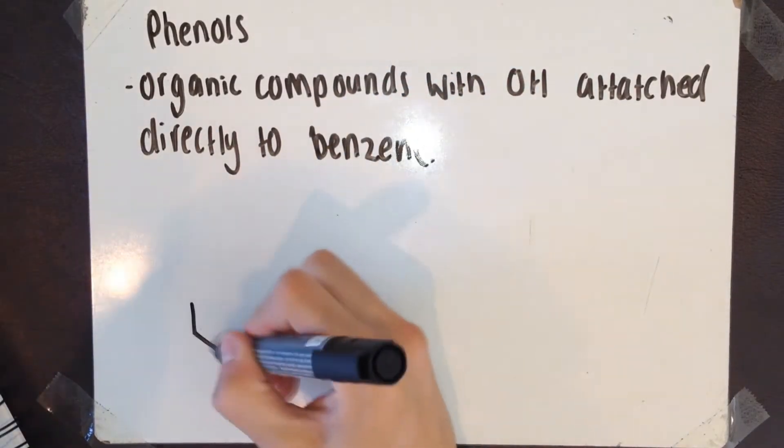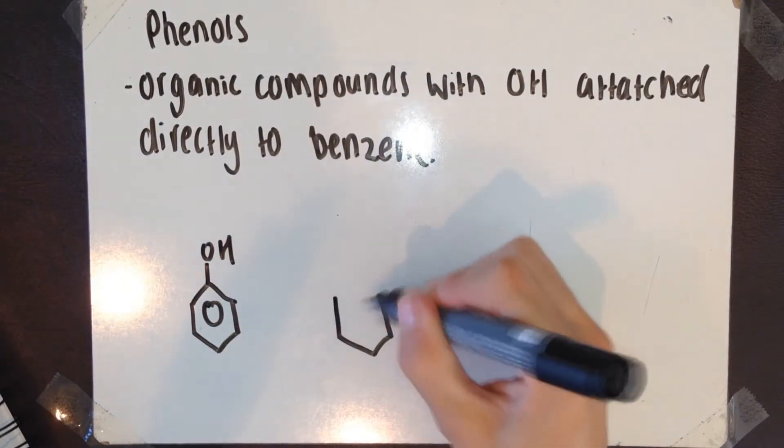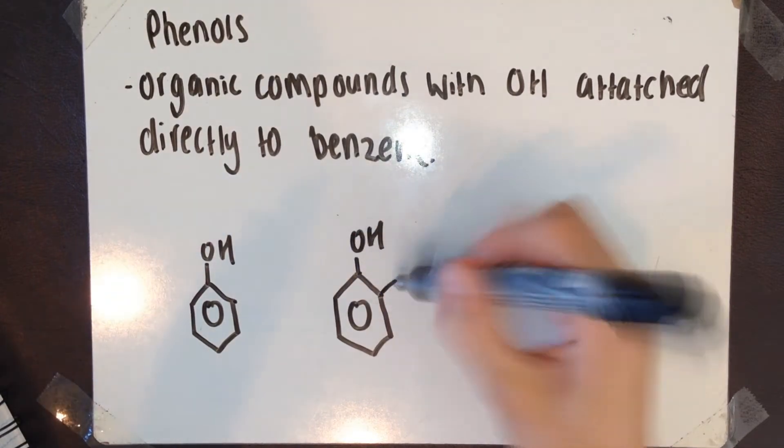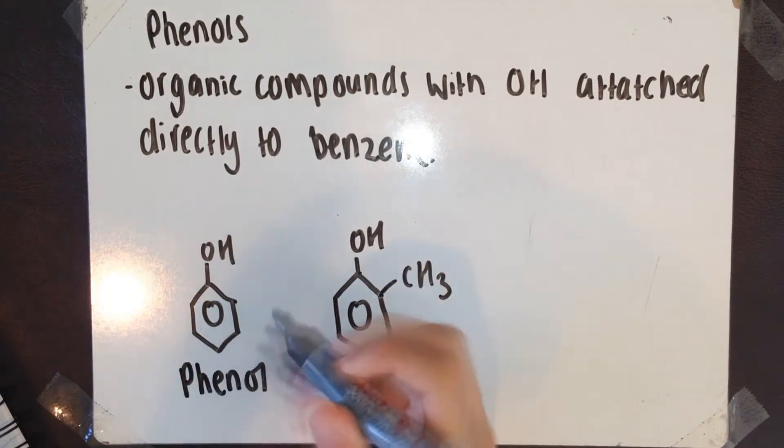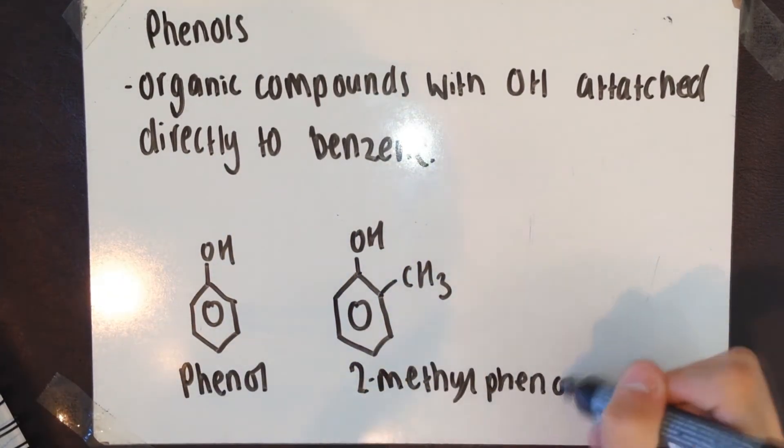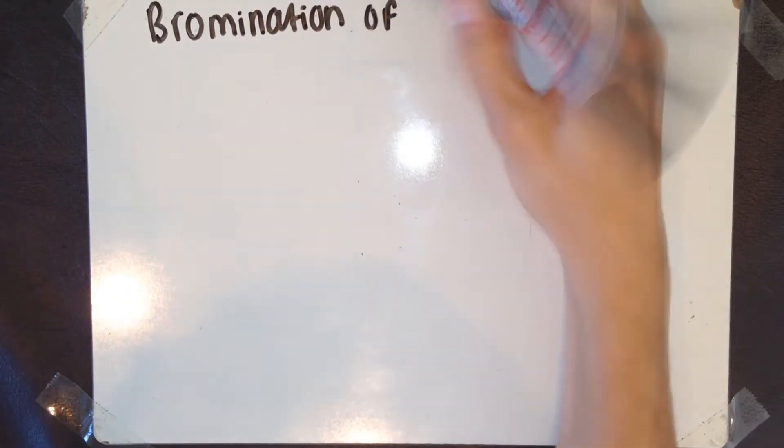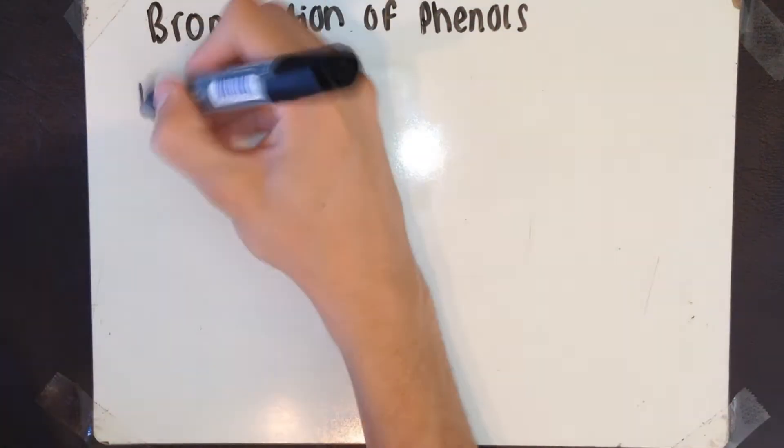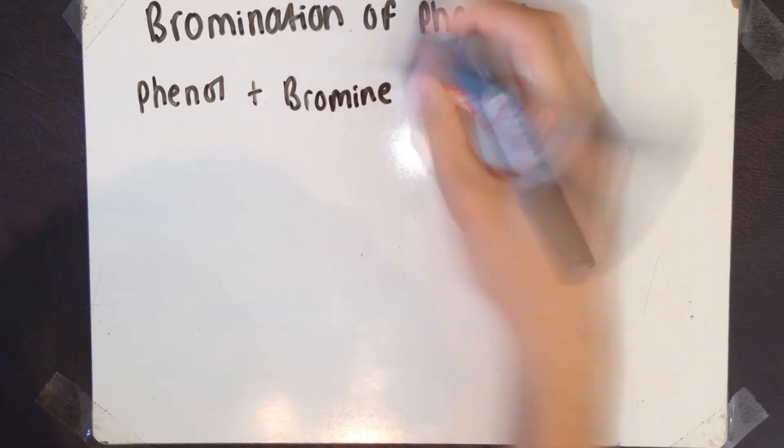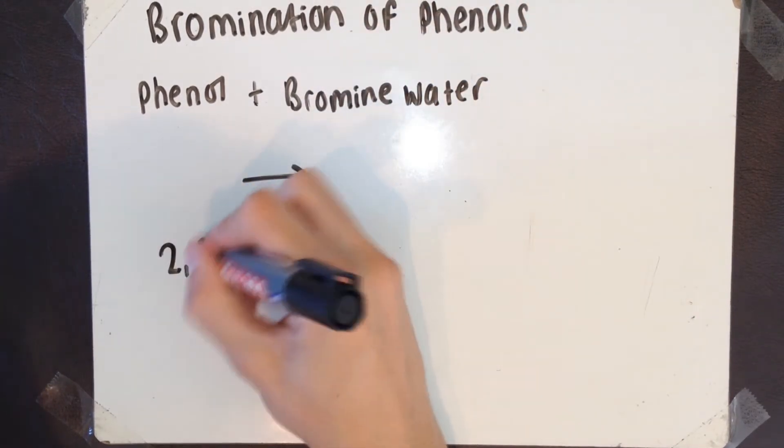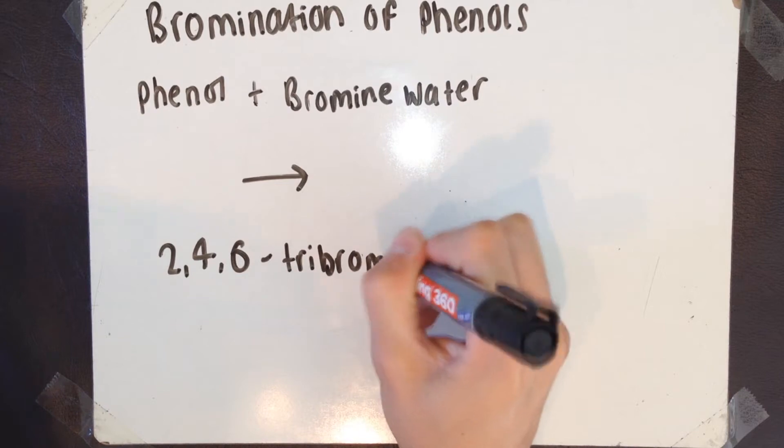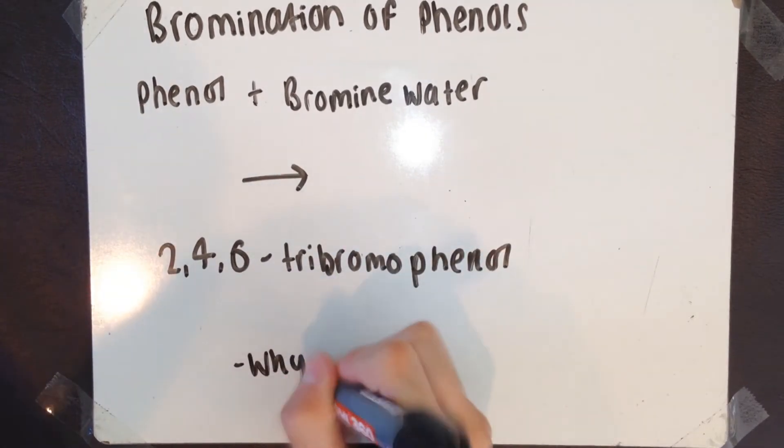Phenyls are a group of organic compounds with an OH hydroxy group attached directly to the benzene itself. Here we have phenyl and 2-methylphenyl. I'm now going to talk about the bromination of phenyl and why this can happen. If you react phenyl with bromine water, you're left with 2,4,6-tribromophenyl. This shows that phenyl does react with bromine. But why is this?